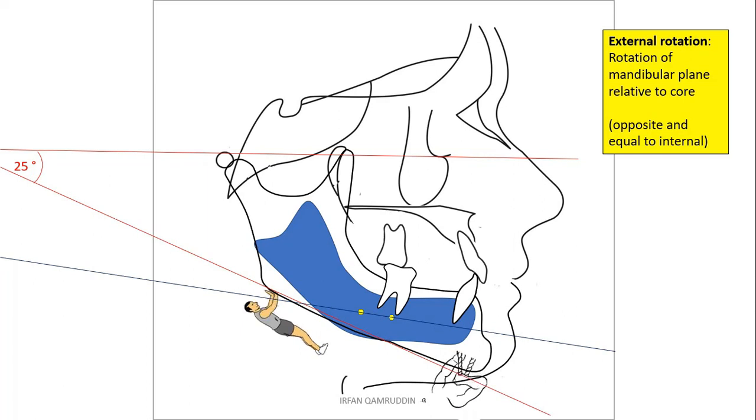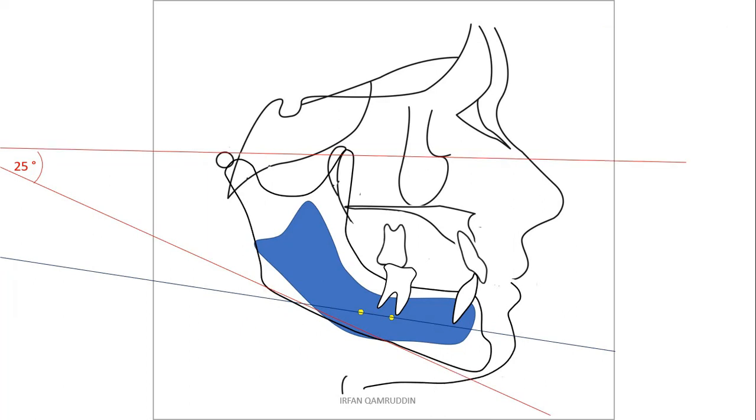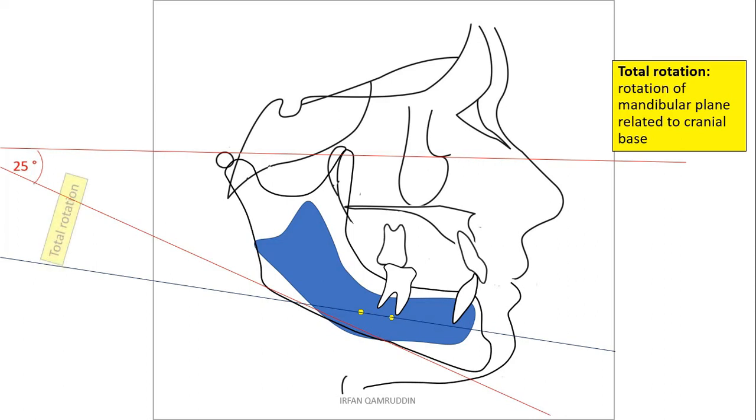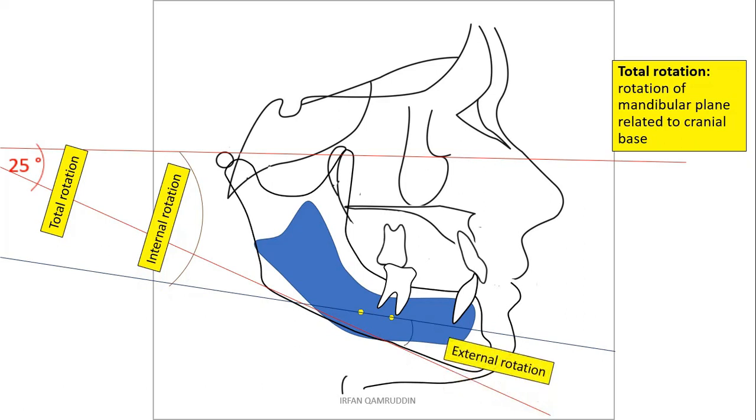So if you want to know the total rotation in your patient, then you will have to measure the cranial base with the mandibular plane, because it is the final result of the internal and external rotation. If you want to see how much internal rotation was there in your patient, then you will have to measure cranial base with the implant line. And if you want to know how much external compensation was there in your patient, then you will have to measure implant line with the mandibular plane.